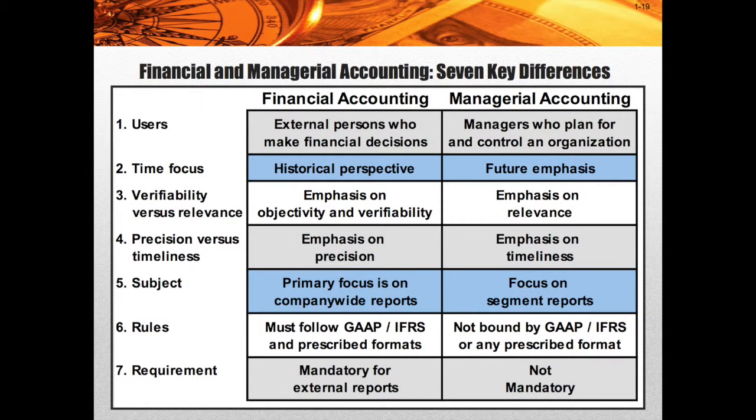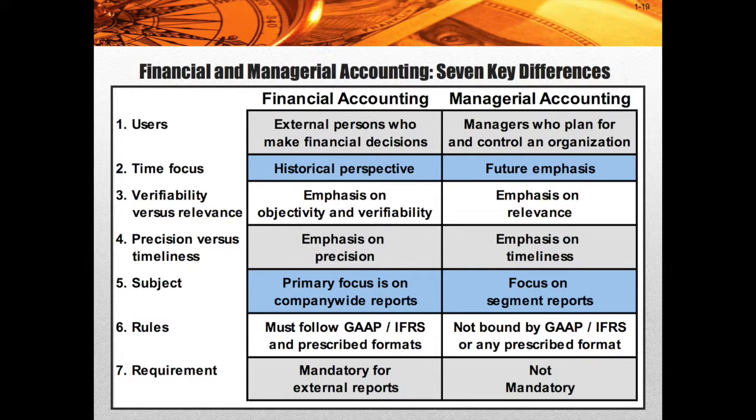Number three is verifiability versus relevance. The emphasis in financial accounting is on objectivity and verifiability — the outside world should see exactly the same view as the inside world in your financial statements. In managerial accounting, the emphasis is on relevance. Relevance is very important for the internal use of the company. Is this information relevant? If it's not, we don't need it. We only need relevant information from our managerial accounting statements.